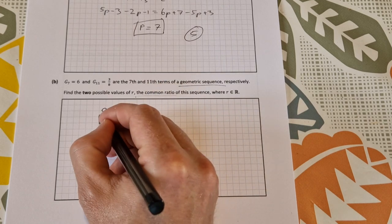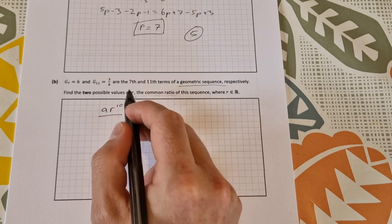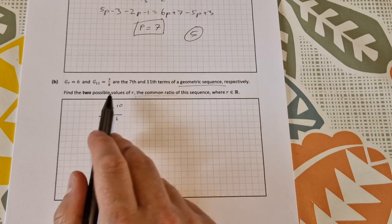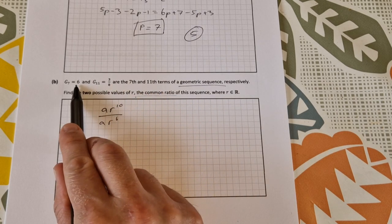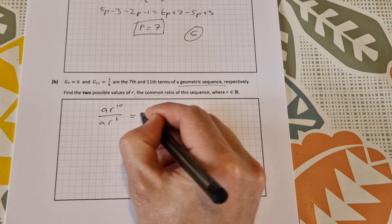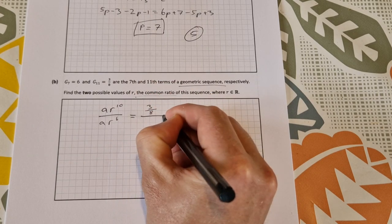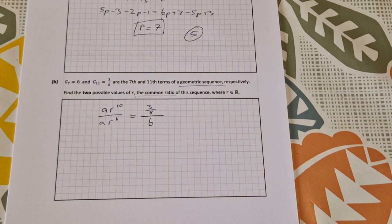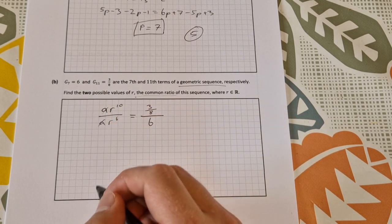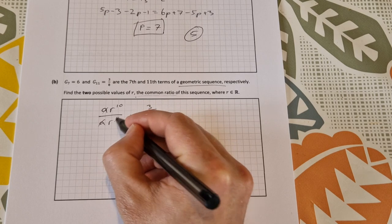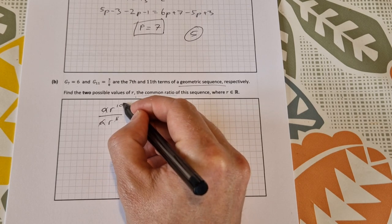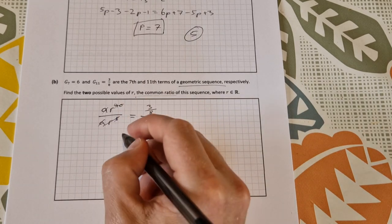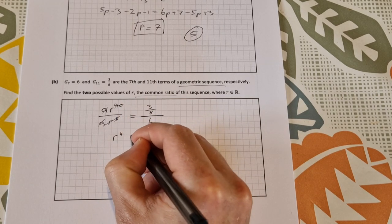Well that's going to be the same as this divided by this, so that's equal to 3 over 8 divided by 6. Then we can simplify: a cancels with a, r to the 6 cancels with r to the 10, so the r to the 6 is gone and r to the 10 becomes r to the 4. So we just have r to the 4 is equal to 3 over 48 which simplifies down as 1 over 16.